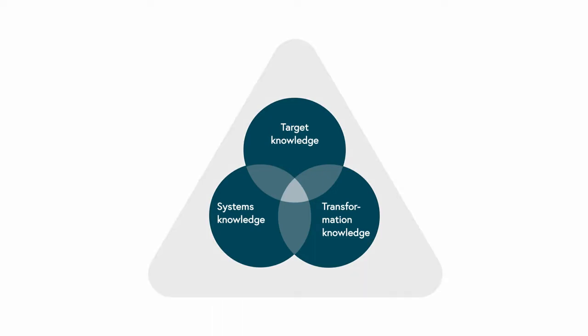We can link these three types of knowledge to the three key terms: facts, values, and agency. While facts are mainly associated with systems knowledge, values are mainly defined as part of the target knowledge, and agency — that is, the capacity to act in a purposeful way — describes the transformation knowledge.